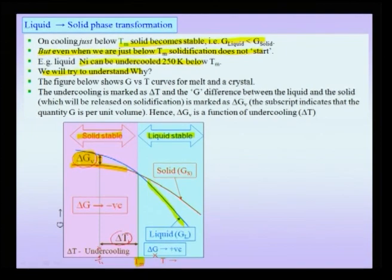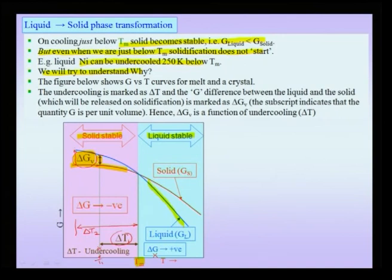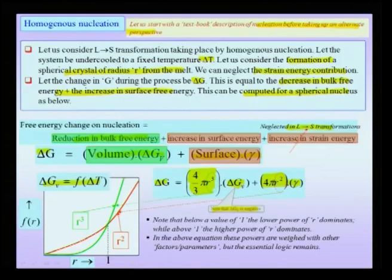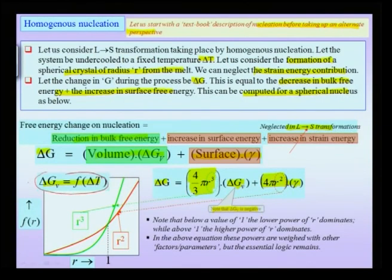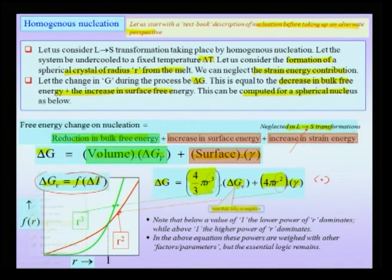Delta G_V is not a constant — it depends on undercooling. At a larger undercooling delta T2 compared to delta T1, the Gibbs free energy benefit delta G_V at that temperature is larger. So delta G_V is a function of undercooling, and for a fixed undercooling we can write equation 1. There are two terms: a negative r-cube term and a positive r-square term. One is a polynomial of degree three, the other of degree two — they differ by one order in r.